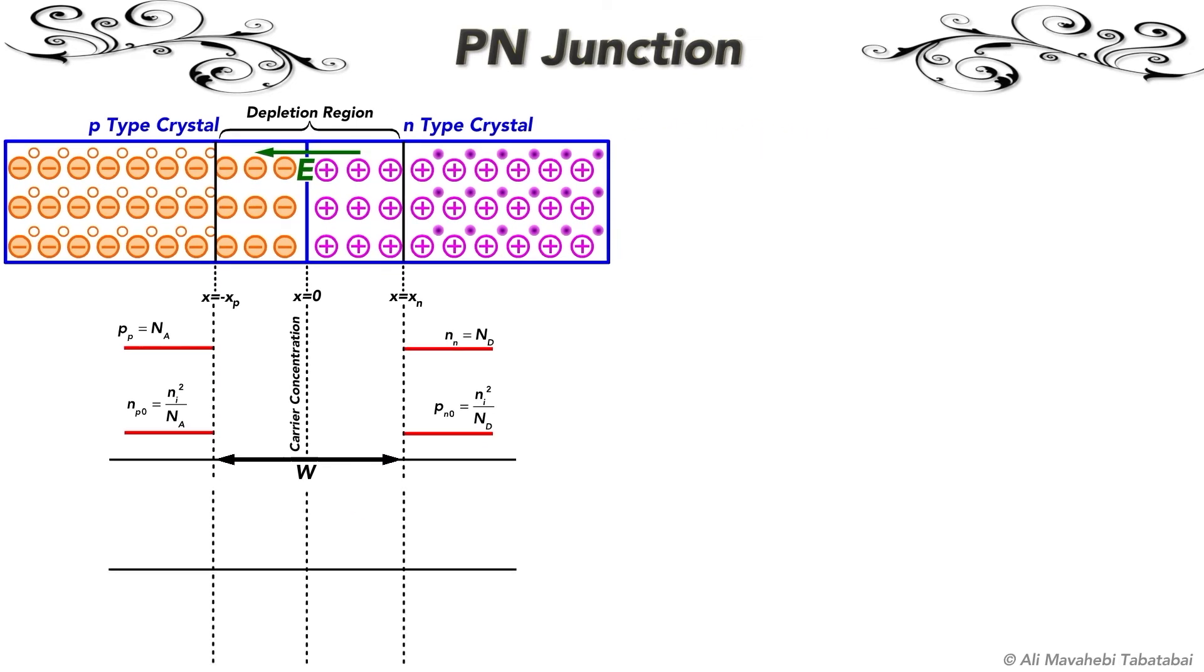In the second graph, you can see the space charge density. If you assume that x is equal to 0 at the middle of the p-n junction, equal amounts of charge exist on both sides. So QnA xp equals QnD xn.